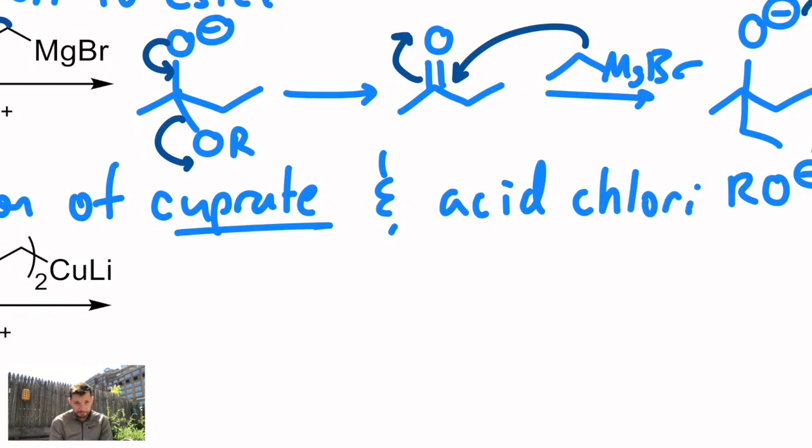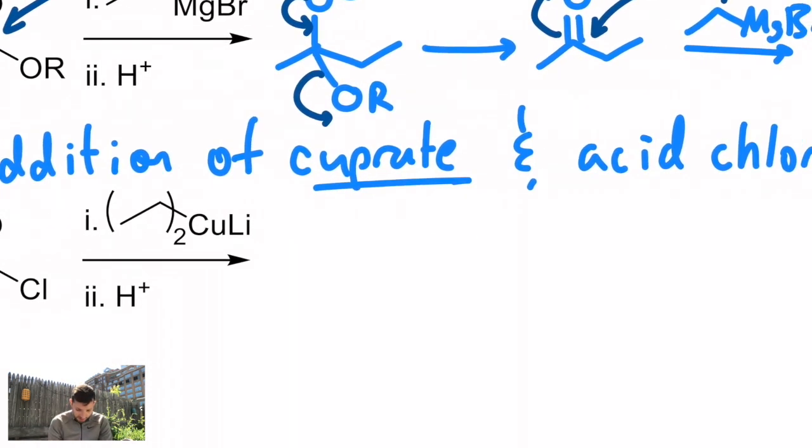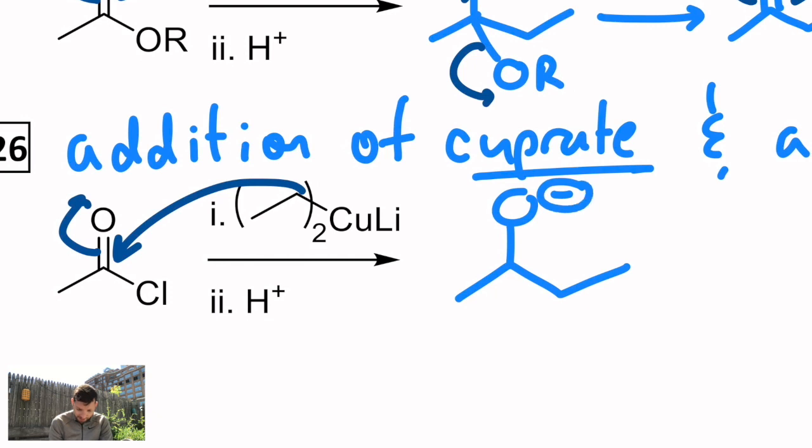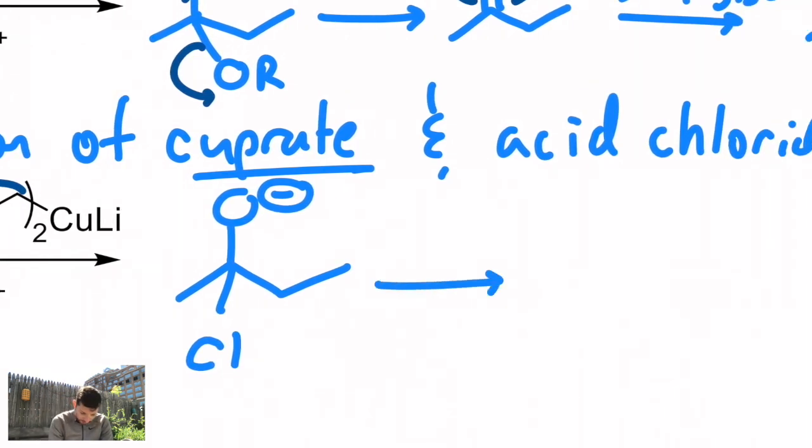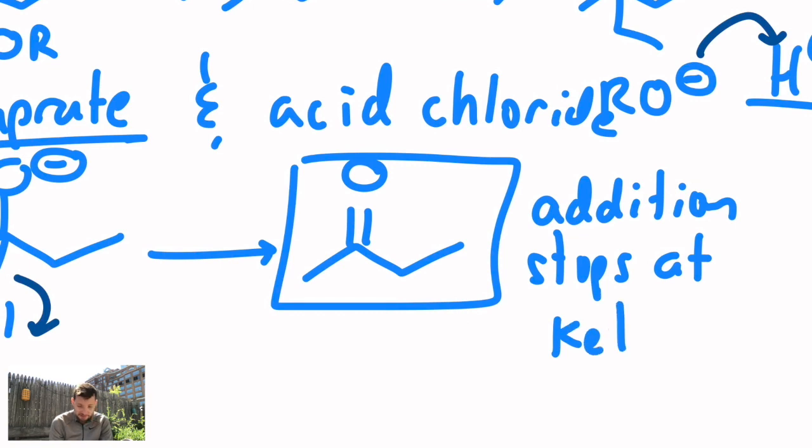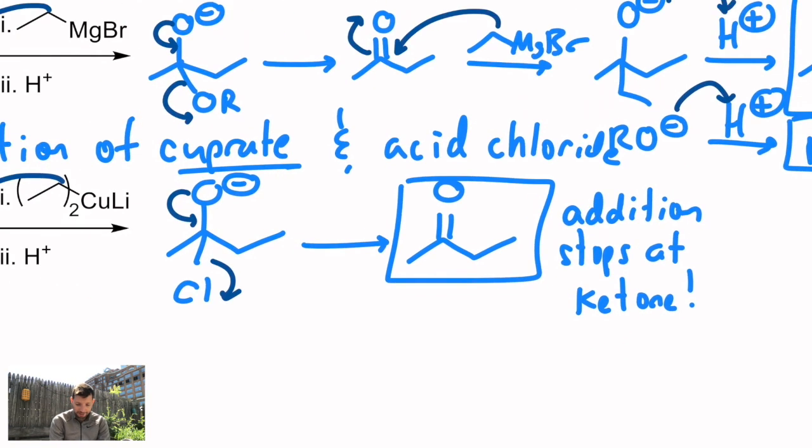So this is addition of a cuprate and an acid chloride. Cuprates turn out to be milder than Grignards or lithiates. So here is an example of where you would imagine you have a negatively charged carbon attached to the copper. So I get the same type of mechanism that I saw two lines up above, and I reform the carbonyl and kick out the chloride. And indeed, I get my ketone. But this is actually a product. Addition stops at the ketone. And that's simply because cuprates don't react with ketones, or at least not these types of ketones.